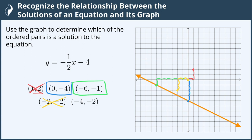Let's move to the last one, (-4, -2). Again we start at the origin and we move in the x direction negative four units — one, two, three, four — and then we move negative two units in the y direction, and our point is here, which does lie on the line, which means it is a solution to our equation. We have now found out of this list of ordered pairs all of the solutions to this equation, and we're done.